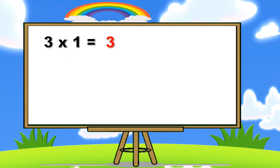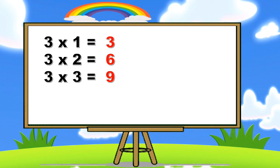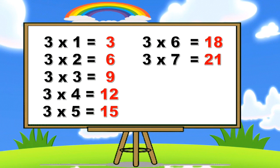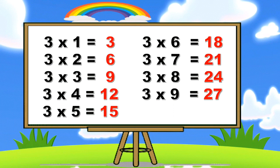Three nines are twenty-seven. Three tens are thirty. Three ones are three. Three twos are six. Three threes are nine. Three fours are twelve. Three fives are fifteen. Three sixes are eighteen. Three sevens are twenty-one. Three eights are twenty-four. Three nines are twenty-seven. Three tens are thirty.